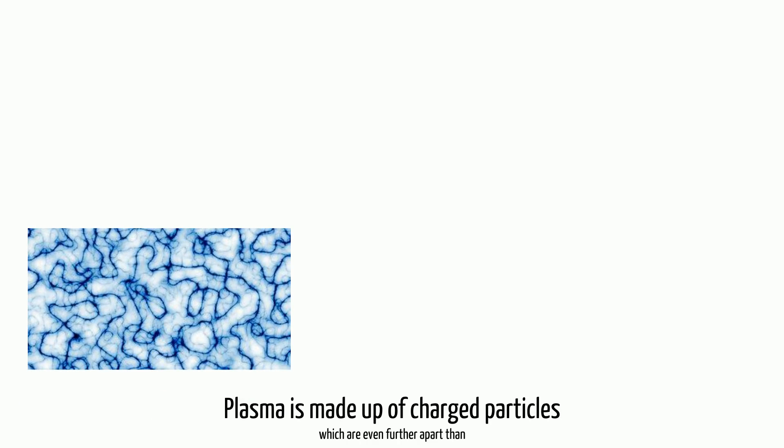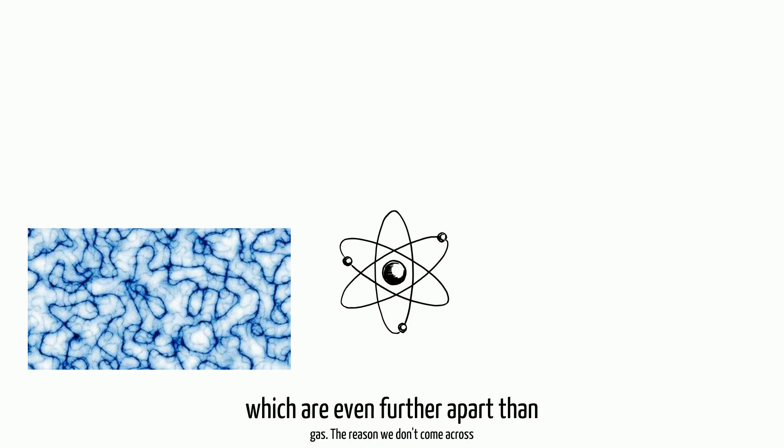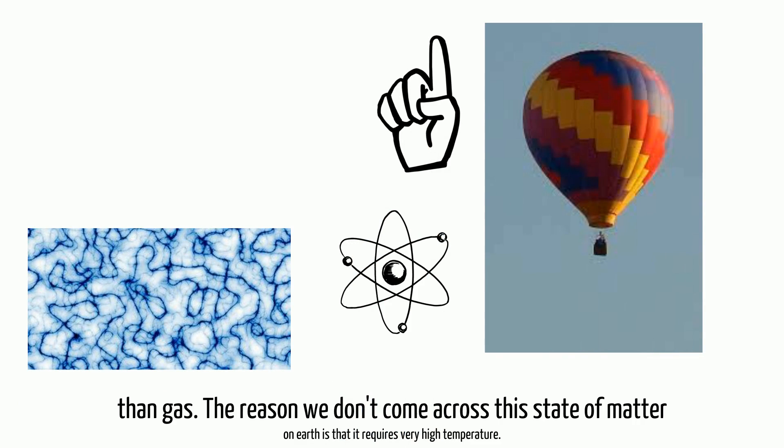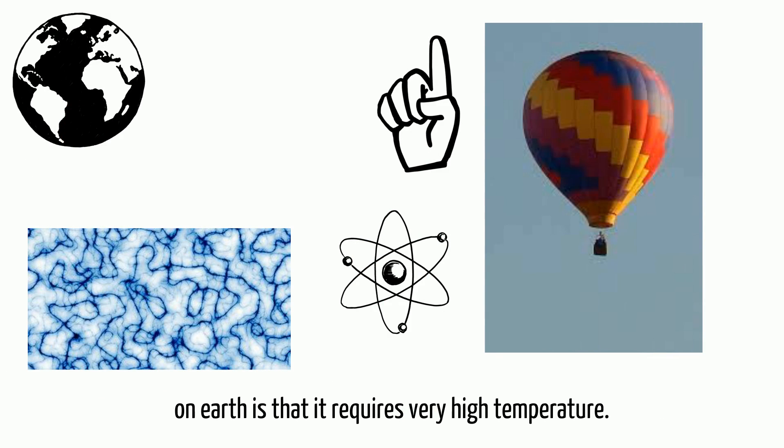Plasma is made up of charged particles which are even further apart than gas. The reason we don't come across this state of matter on Earth is that it requires very high temperature.